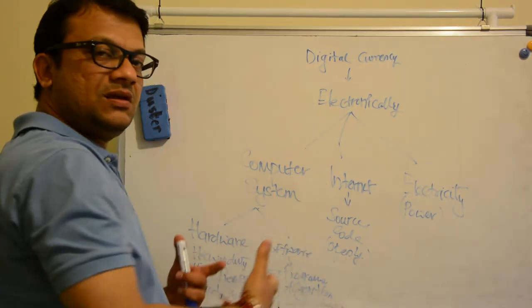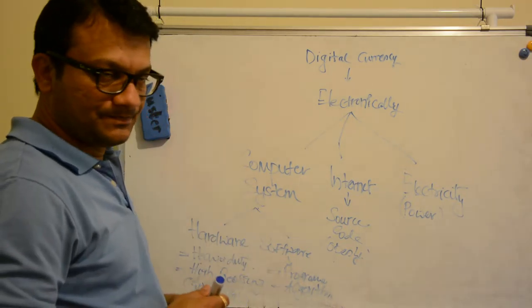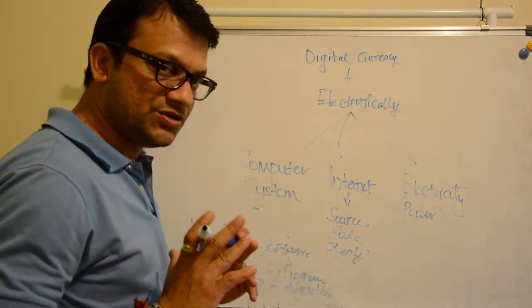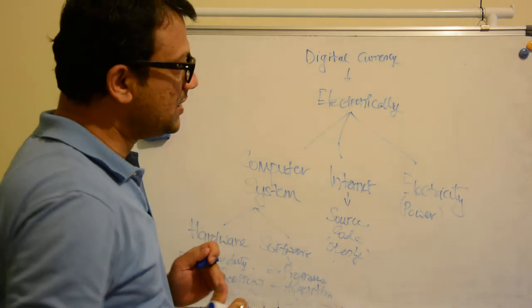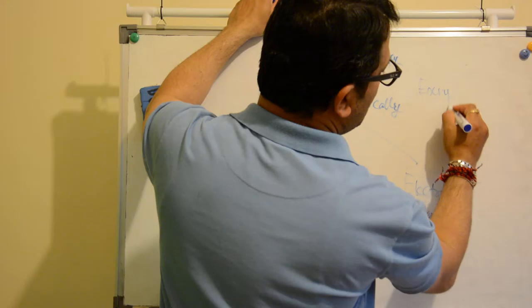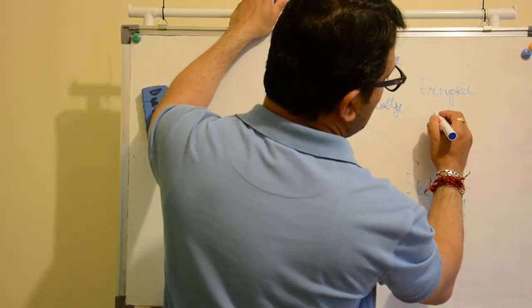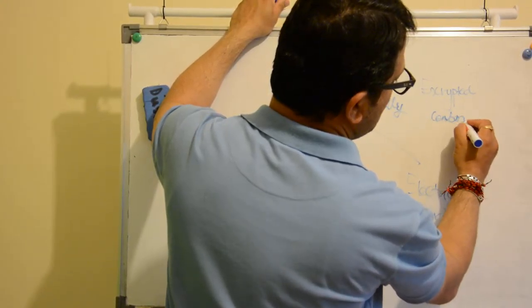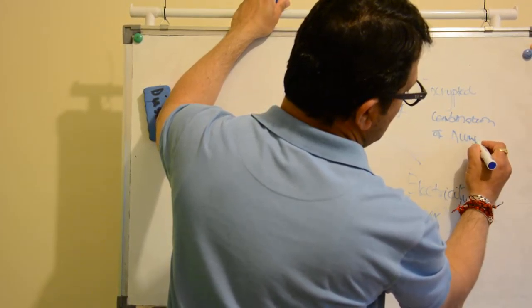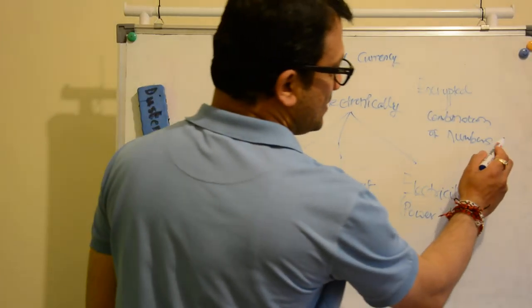are made to process, the outcome is digital currency. I mentioned cryptography, so digital currency is an encrypted combination of numbers. These are